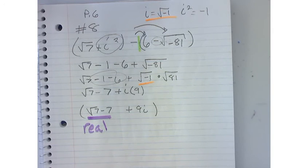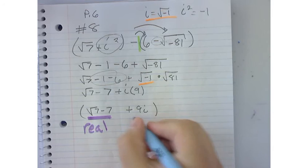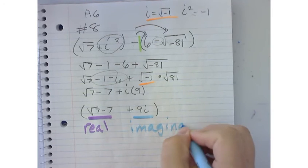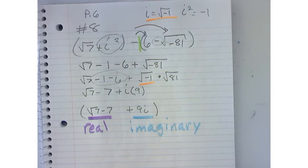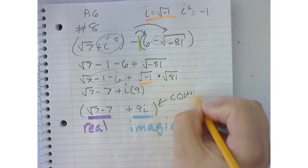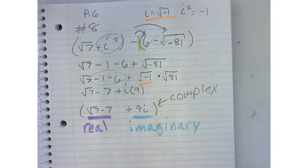This right here is still the imaginary part. And combined, it is the complex number. Does that make sense? Cool.